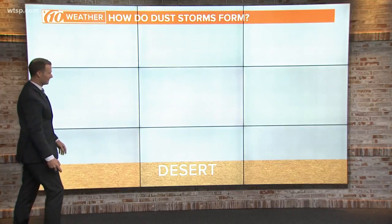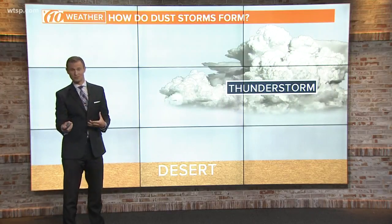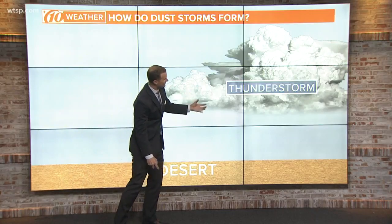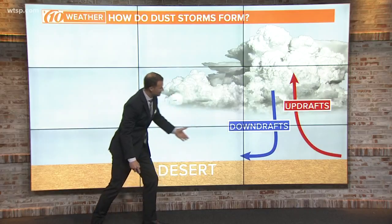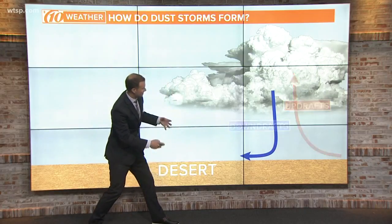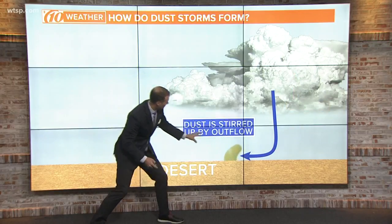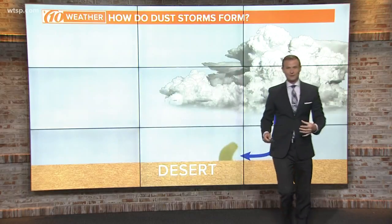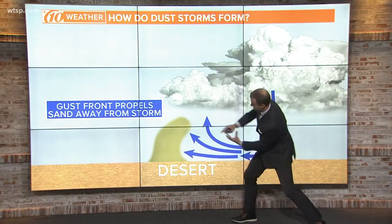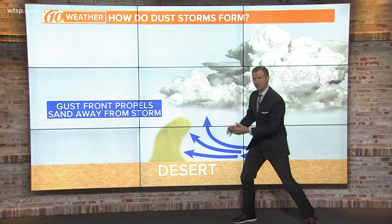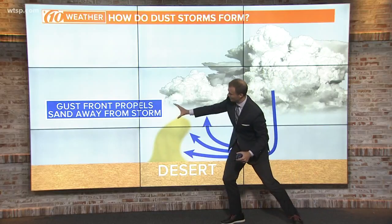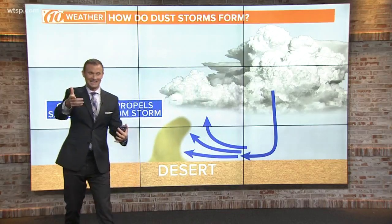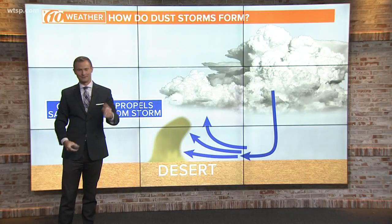Let's take you into the desert — that's where they develop. You need to have sand or dust, and you need a thunderstorm to develop. It doesn't necessarily have to be producing rain, but a thunderstorm, when you have those updrafts and downdrafts, it's the downdrafts that initially stir up that dust in the outflow. As that outflow moves away from the storm, the dust just grows and grows. That gust front is what propels the sand away from the thunderstorm, eventually forming that huge wall of sand heading into cities — sometimes even into Phoenix, like we've seen before.